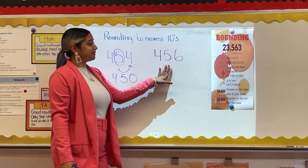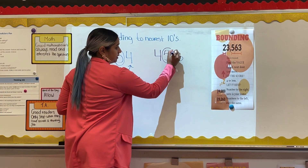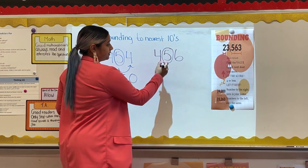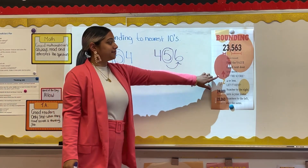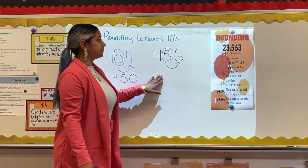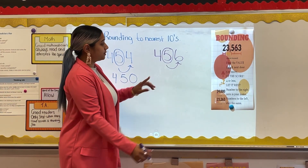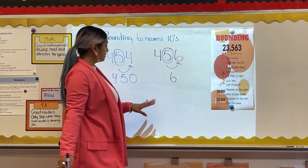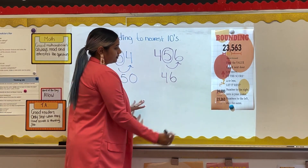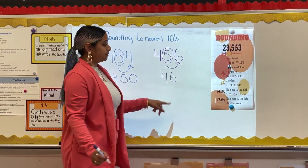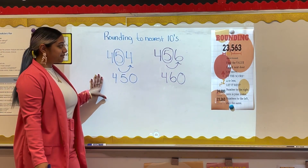Let's take a look at another example: 456. First step, circle your value, which is five, because it is in the tens place. Look to your neighbor. According to our rule, if the digit to the right is five, six, seven, eight, or nine, then you are closer to the next number and therefore must increase the digit by one. So five gets changed into six. Any digits that follow become a zero. So our answer is 460.